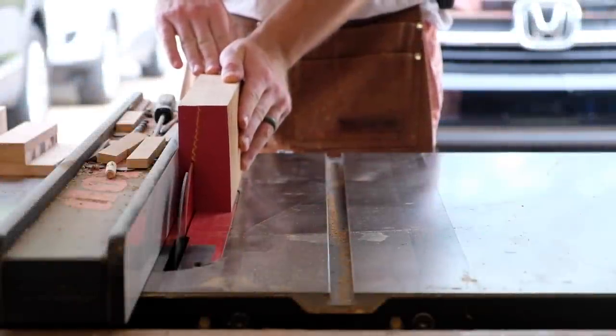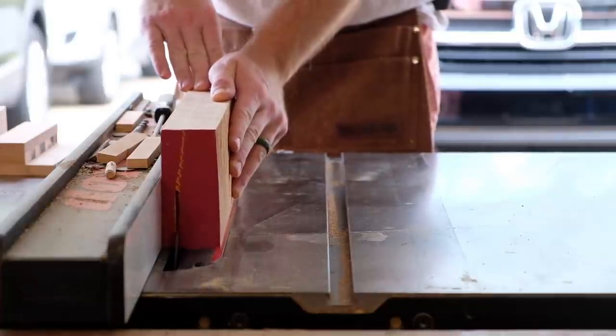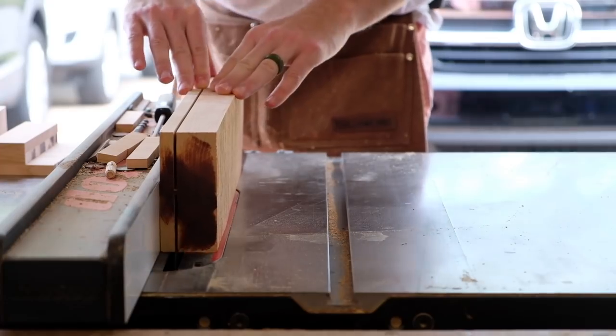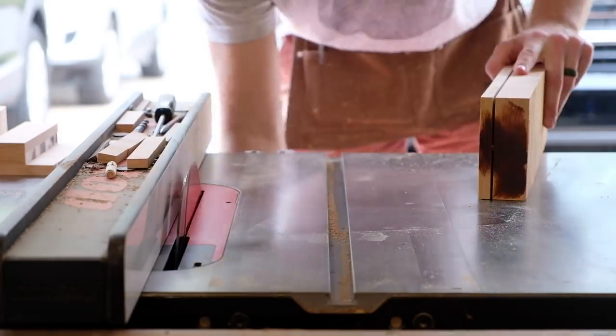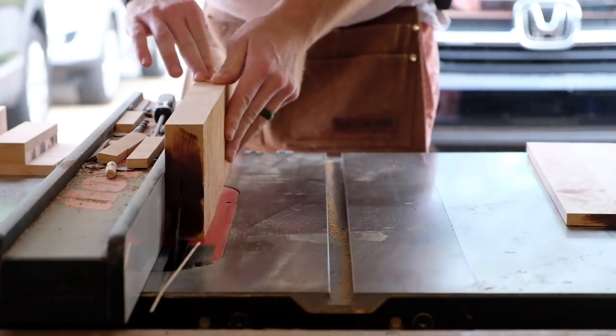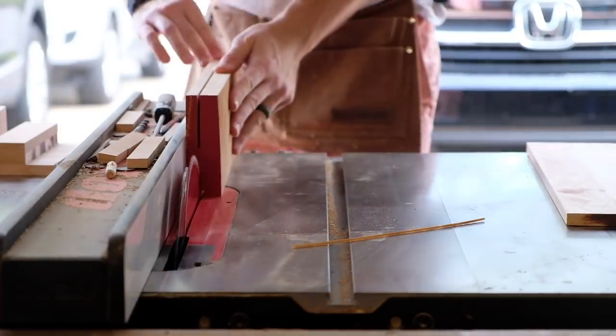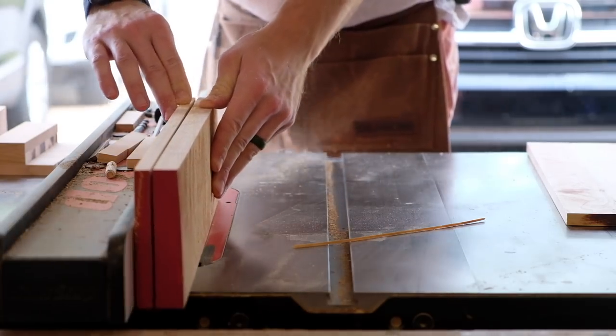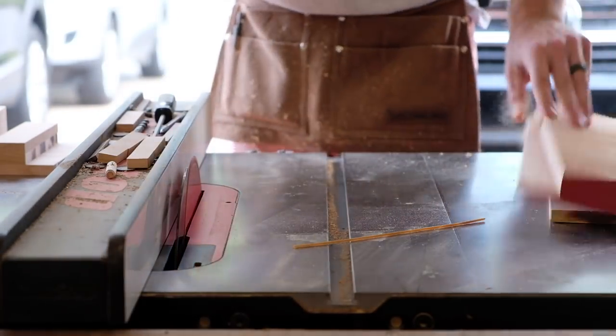With the case mostly done for now I turn my attention to the drawers. As usual I try to work in some type of grain match or book match for the drawer fronts. In this instance I'm resawing an eight quarter board into three thinner boards, one for each row of drawers. I make sure to label these throughout the process so that I keep track of their sequence.